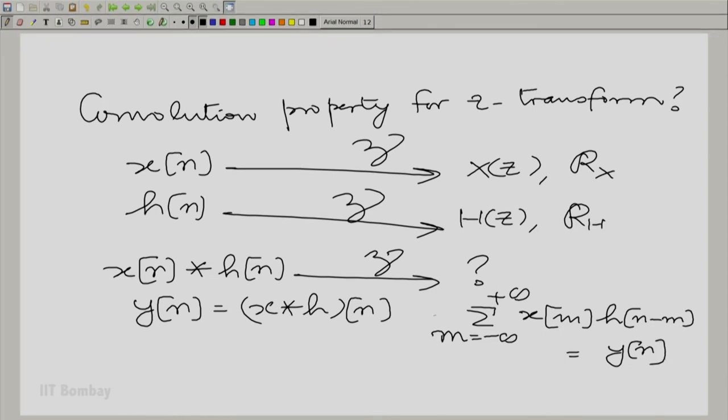So, you need to take summation n going from minus to plus infinity and put a Z to the power minus n there and sum over n. Let us expand this now.